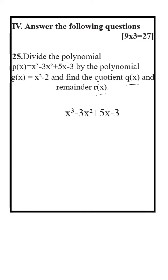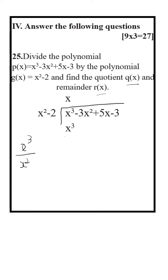Write P of x divided by G of x. That is x square minus 2. x cube upon x square is equal to x. x into x square is equal to x cube. x into minus 2 is equal to minus 2x.